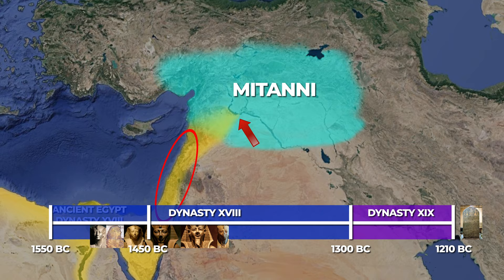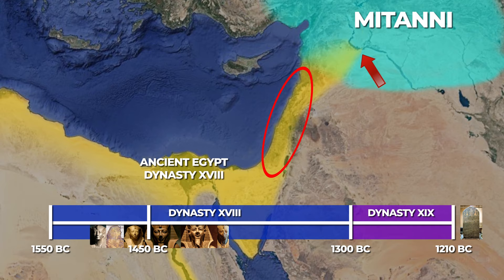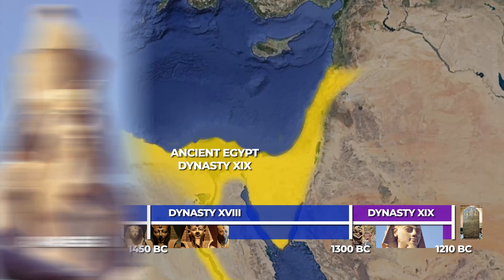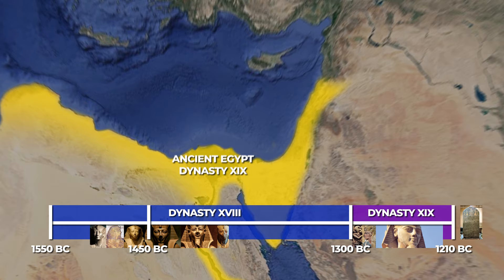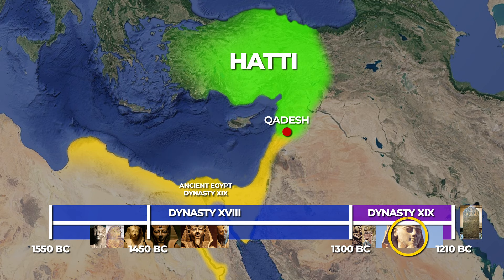Egyptian influence in the Levant would largely be re-established during the reigns of the early 19th Dynasty pharaohs – Ramses I, Seti I, and Ramses II – culminating in another Egyptian peace treaty, this time with their new rival, the Hittites, following the Battle of Kadesh during the reign of Ramses II. Again, these territories could not have been subdued had it not been for a thriving Egyptian state.